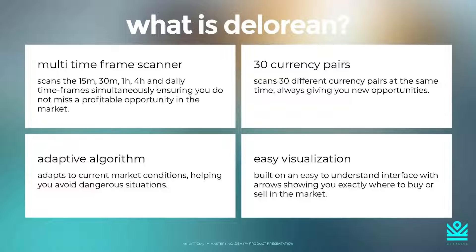It scans 30 different currency pairs, which means across those five timeframes and 30 currency pairs, it is scanning for 150 unique opportunities every single second. We've had this algorithm for approximately four years, and it's very adaptive, keeping you out of key market situations and keeping you out of dangerous market situations, and keeping you in the market when you need to be in the market.